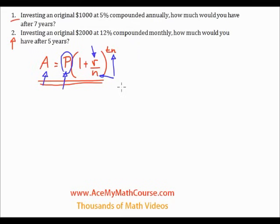For example, in the first example here we have annual compounding, which means that N would be one because it's compounded only once a year. And finally, the T of course is time.